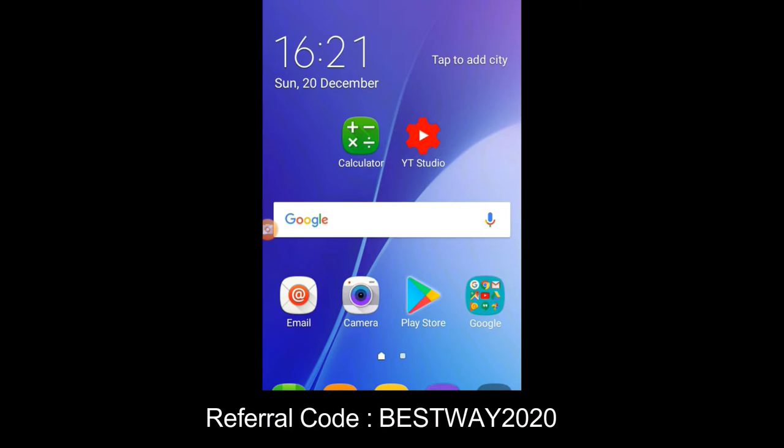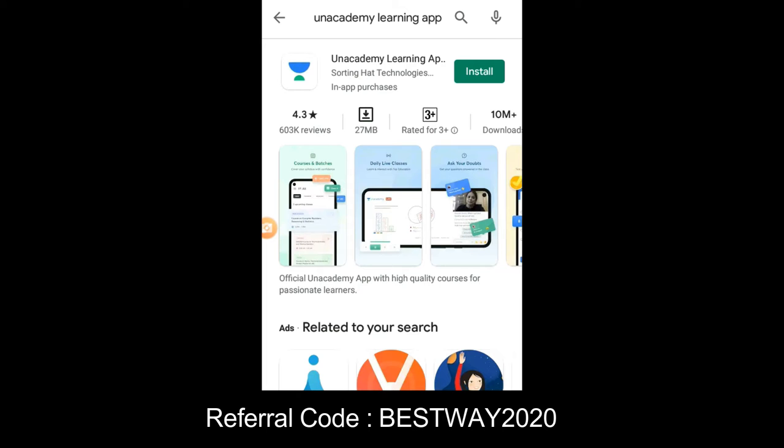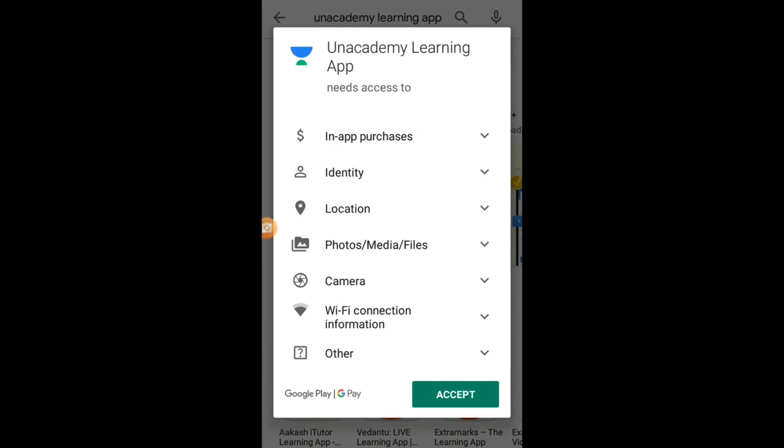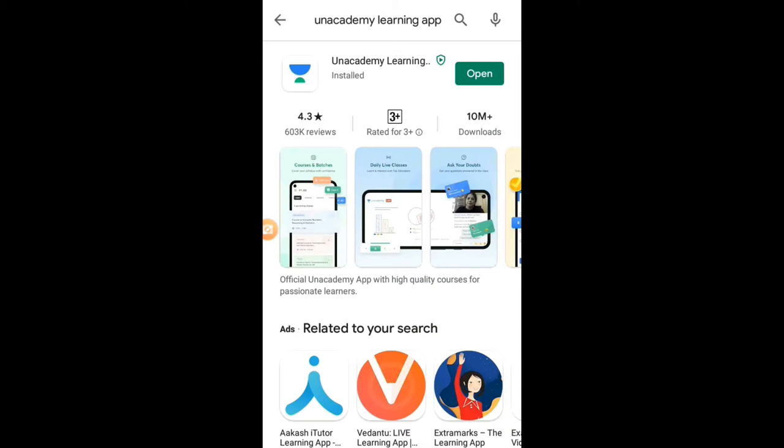In this video we are going to see how to access all the free courses and free quizzes in Anacademy app. So U-N-A-C-A-D-E-M-Y, Anacademy learning app and click on Install. Click on Accept. Now as you can see, app is installed. Click on Open.